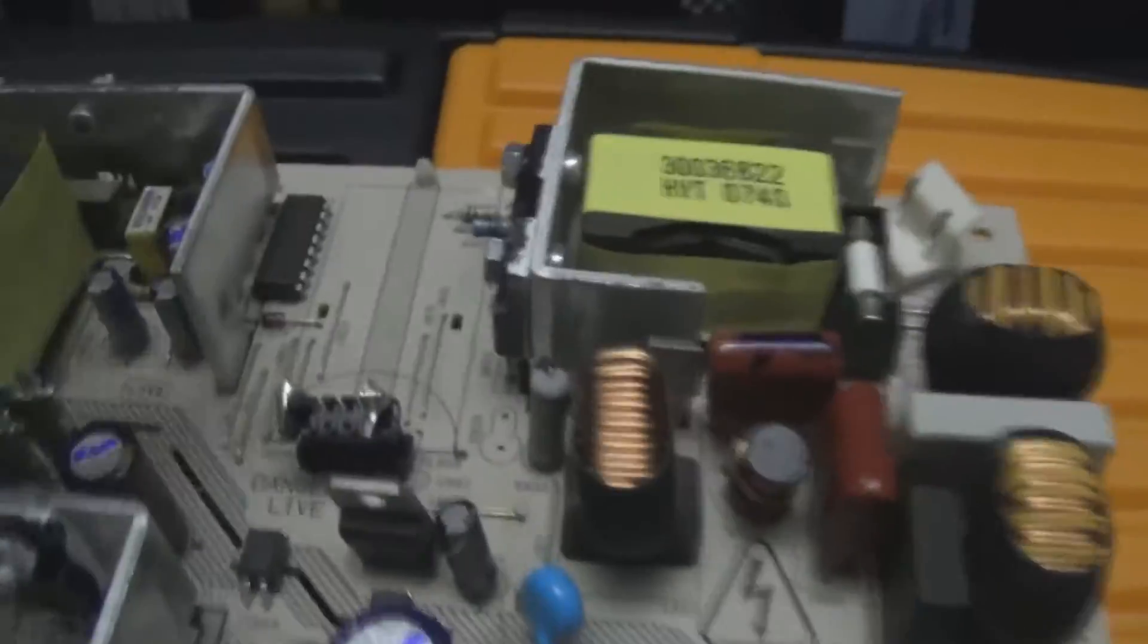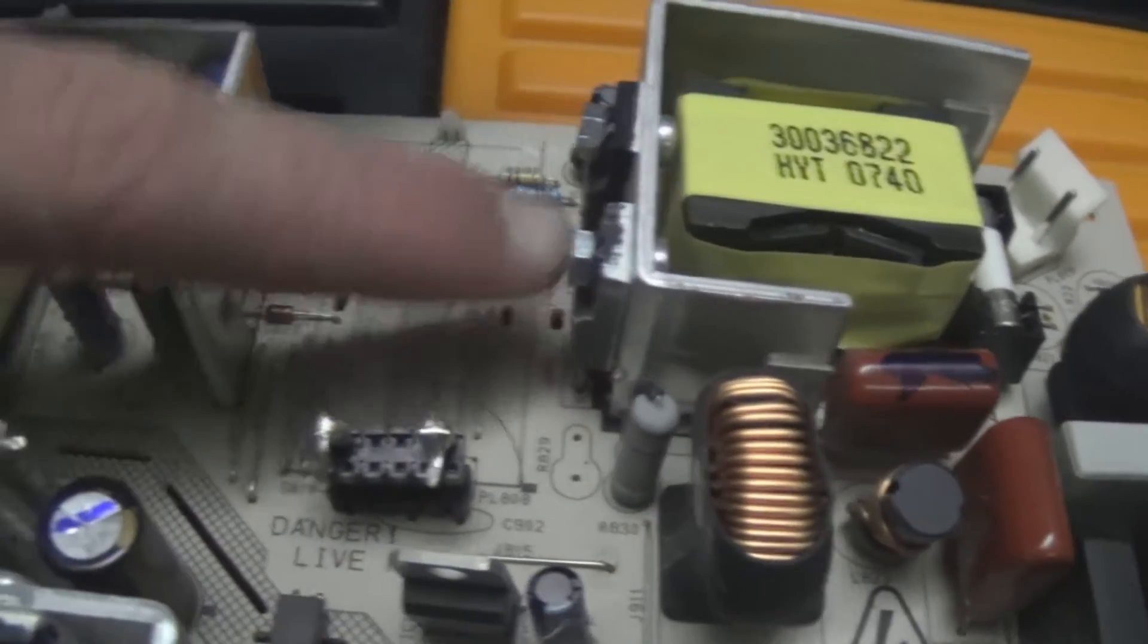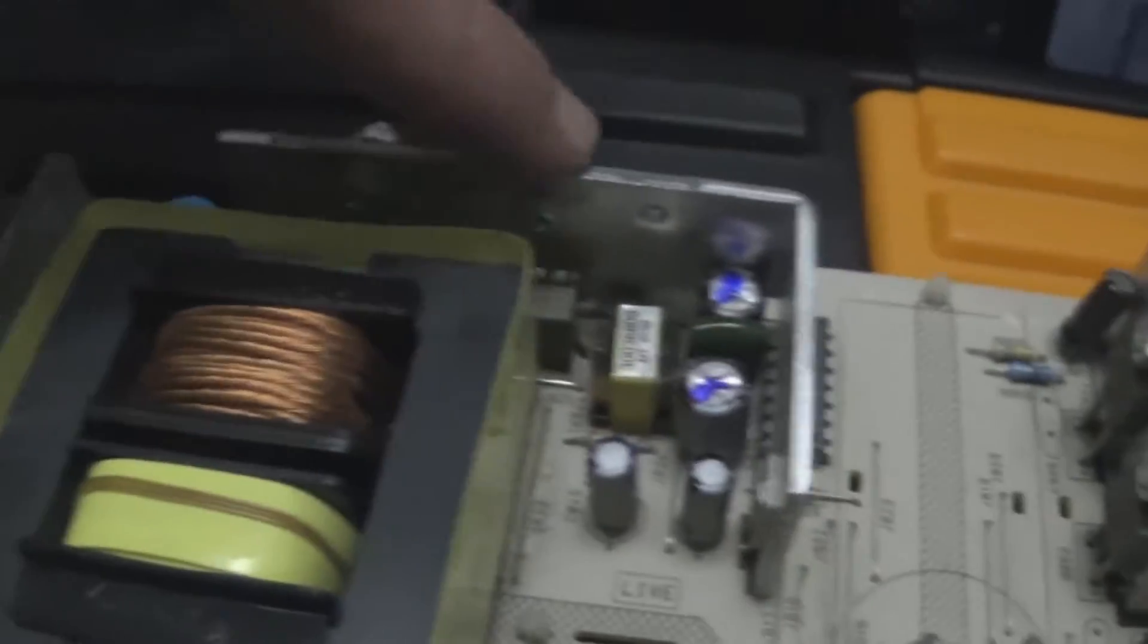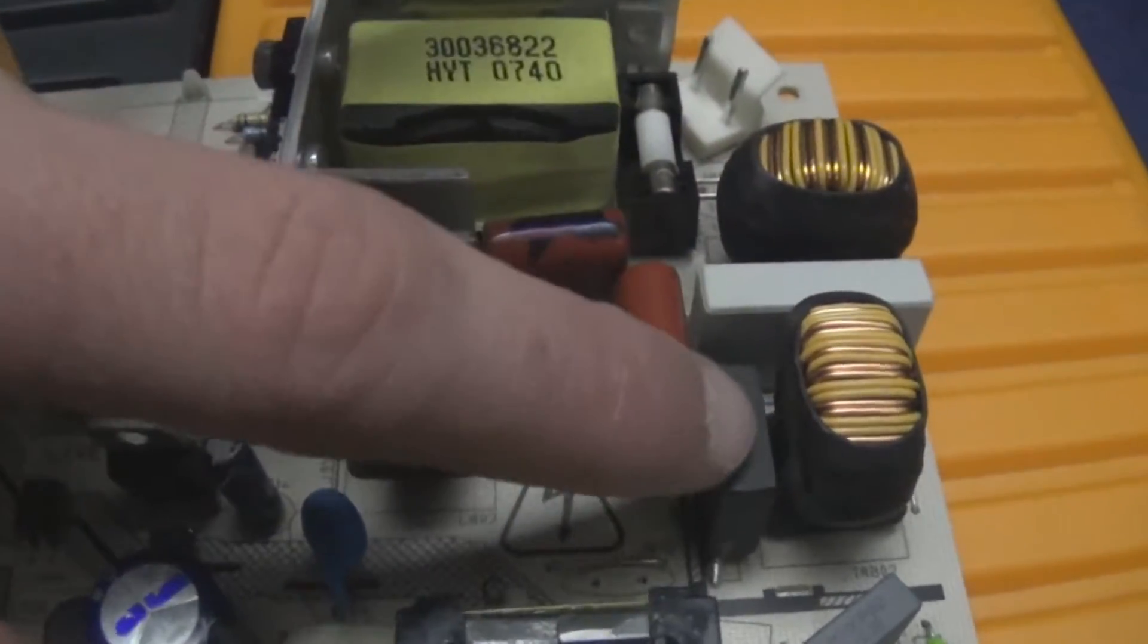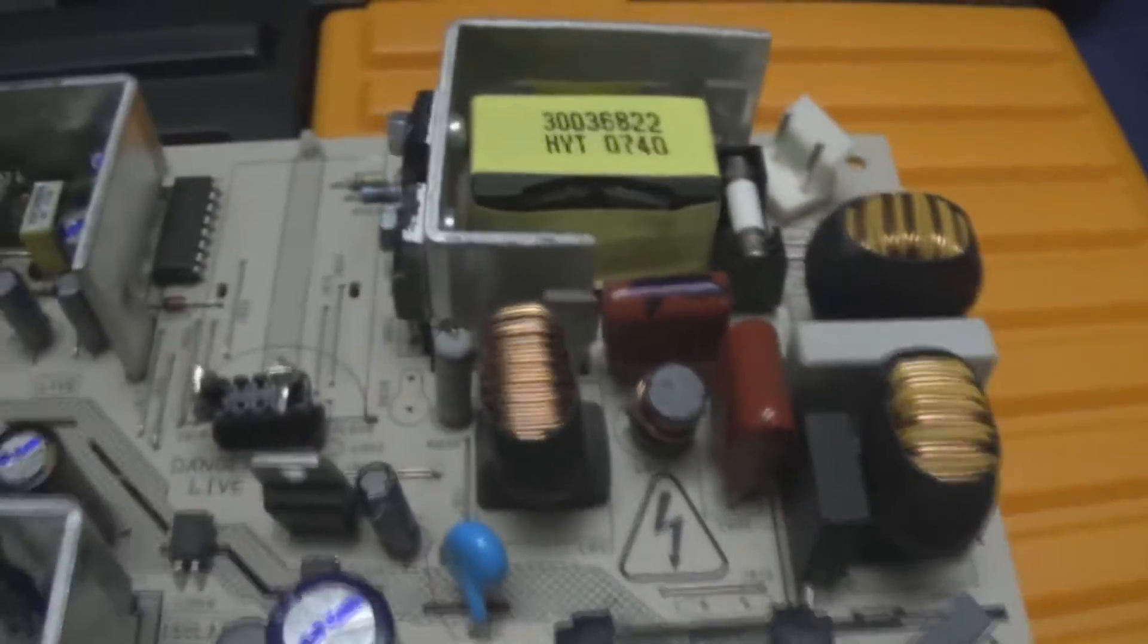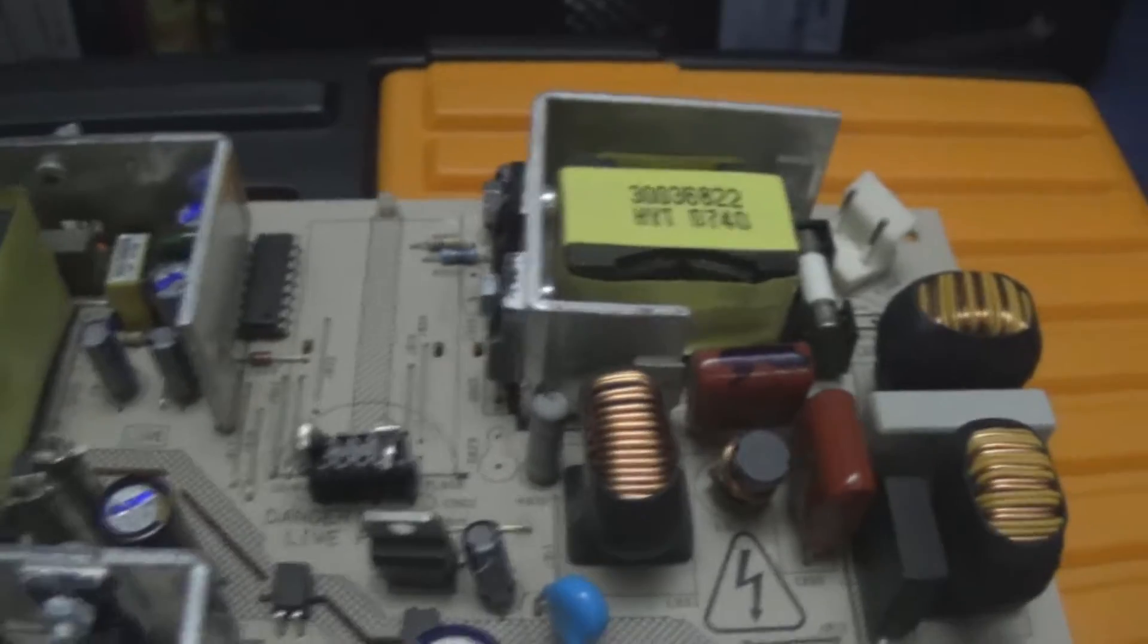But it kept blowing up the fuse, and normally when you get a power supply blowing up the mains fuse in such a manner, that normally means that one of the power devices, like the PFC devices here, or the switching transistors, or the AC input side, so the rectifier, or one of the filtering components, that normally means one of those is shorted out.